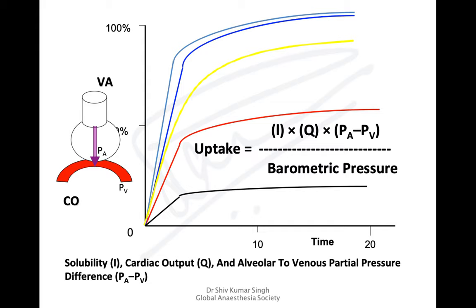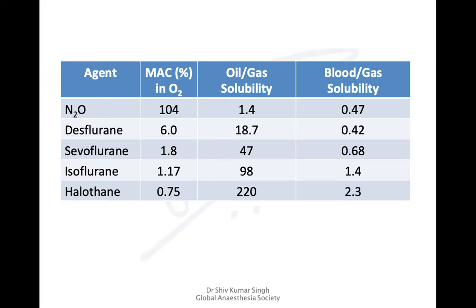The ratio of alveolar to inspired concentration buildup or uptake is dependent on the solubility of the volatile anesthetic agent, on the cardiac output, and the alveolar-to-venous partial pressure. So uptake equals the product of solubility, cardiac output, and alveolar-to-venous partial pressure, divided by the barometric pressure. MAC depends on the oil-gas solubility, and uptake from the lungs depends on the blood-gas solubility.